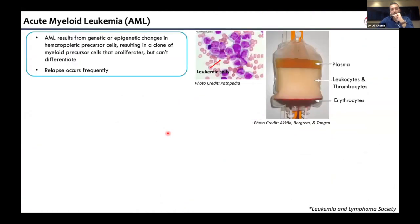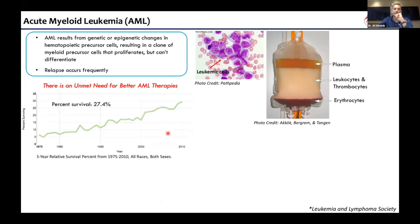Acute myeloid leukemia is a heterogeneous hematological cancer characterized by the accumulation of somatic mutations in immature myeloid cells. These mutations alter the self-renewal, proliferation, and differentiation capabilities of the cells, and these immature cells eventually expand in the bone marrow, peripheral blood, and other tissues, resulting in impaired hematopoiesis and bone marrow failure. Approximately one-third of AML patients fail to achieve complete remission, and the survival rate of AML is around 30%, so there is an unmet need for better AML therapies.